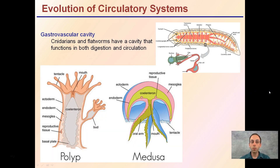One of the first evolutionary steps was the development of a gastrovascular cavity. Cnidarians and flatworms have a cavity that functions for both digestion and circulation. While they do have a circulatory system, it overlaps with the digestive system — this is why these are considered our most primitive organisms.